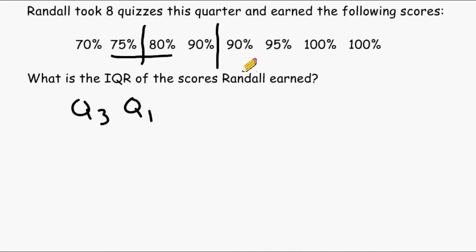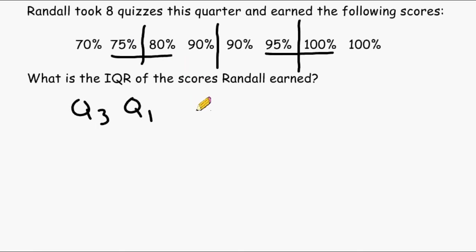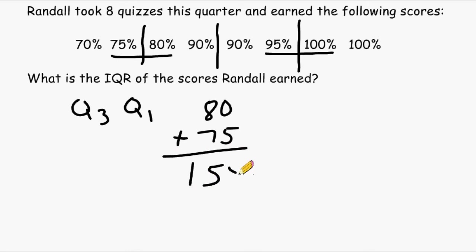We have to do the same thing for Q3 — take those four numbers, break them in half, and determine what is in the middle of the two middle numbers. One way to find the middle of any two numbers is to add them and then divide by two. So if we take 80 and 75 and add those together, we get 155, and then we divide that total by two.